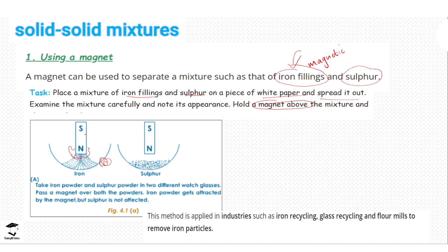So this process is very common, especially in industries when they are trying to remove impurities from compounds, especially in food industries as well, flour mills, they usually have some magnetic machines that attract any component that is magnetic. So it is also used in iron recycling and also glass recycling and commonly used in flour mills to remove those magnetic particles in the flour.